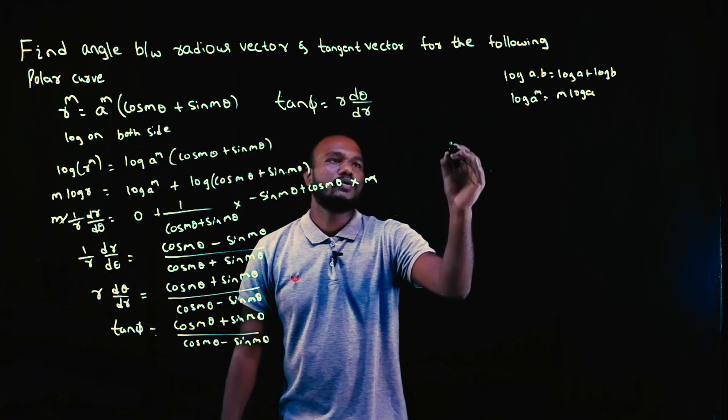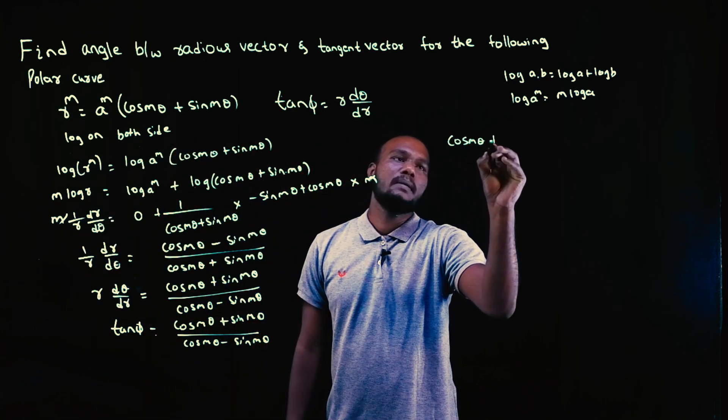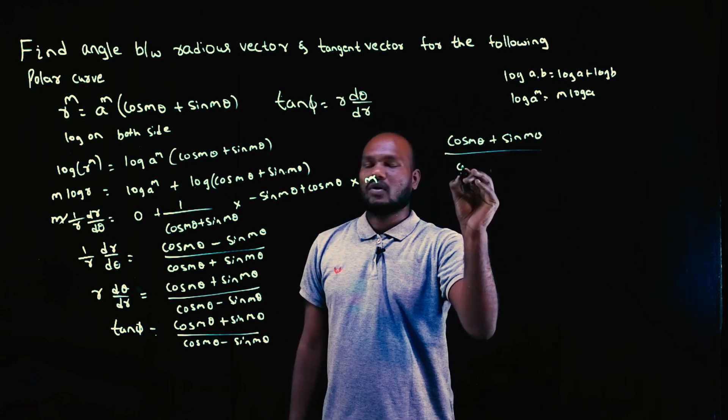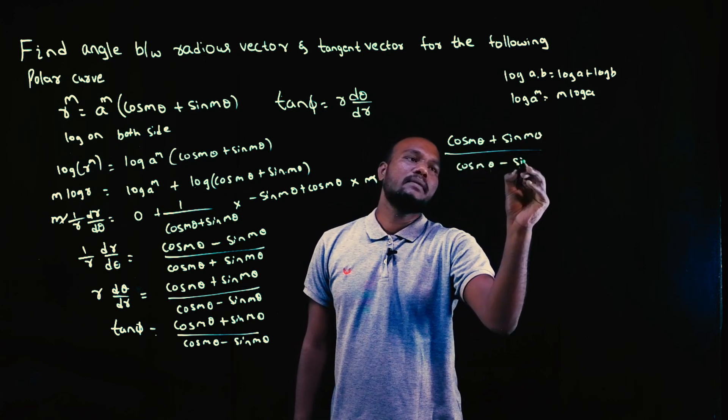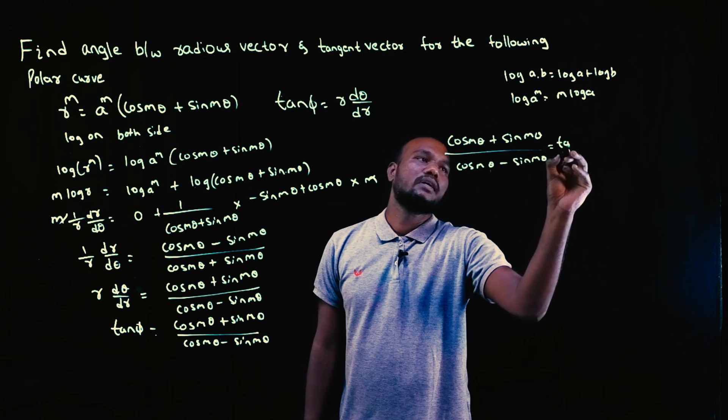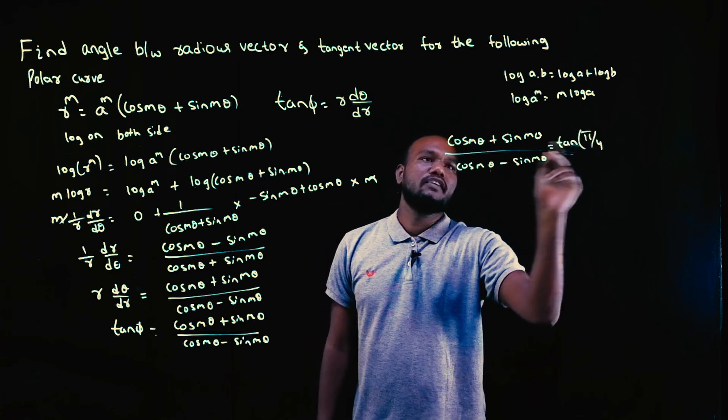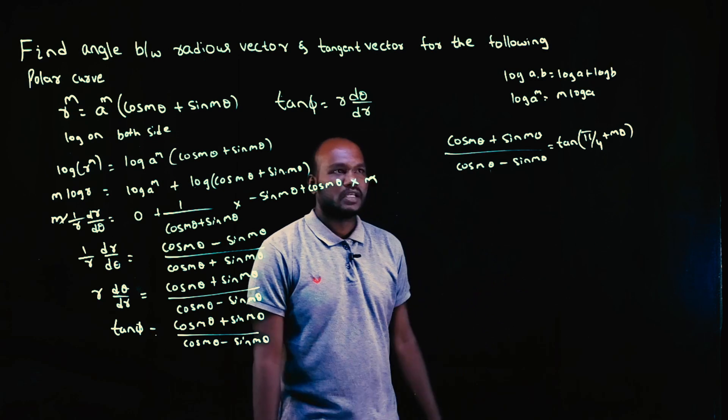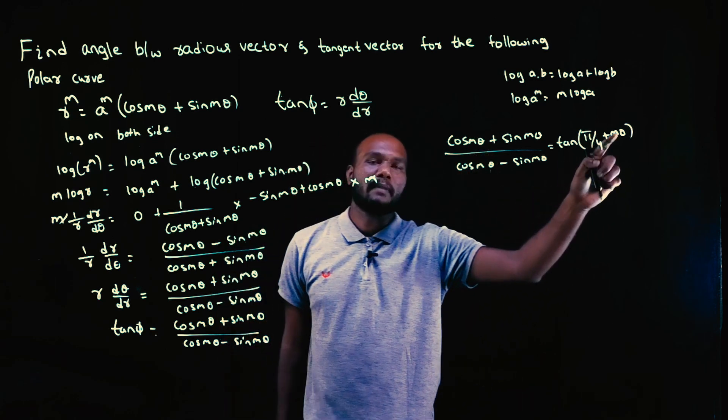We know the formula (cos m theta + sin m theta)/(cos m theta - sin m theta) equals tan(pi/4 + m theta). If there were a minus and plus, this would become minus.